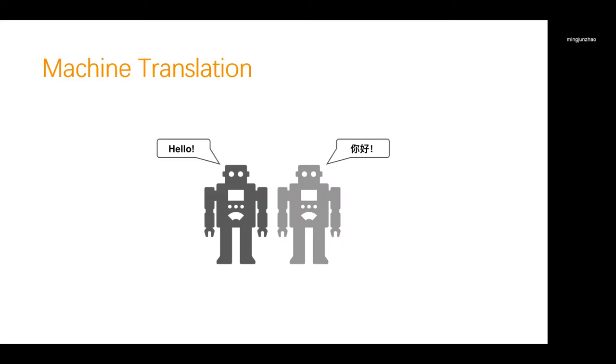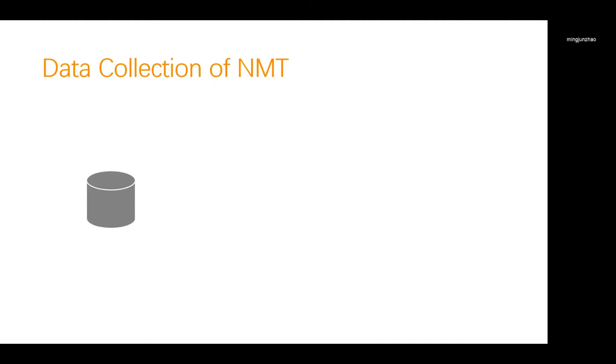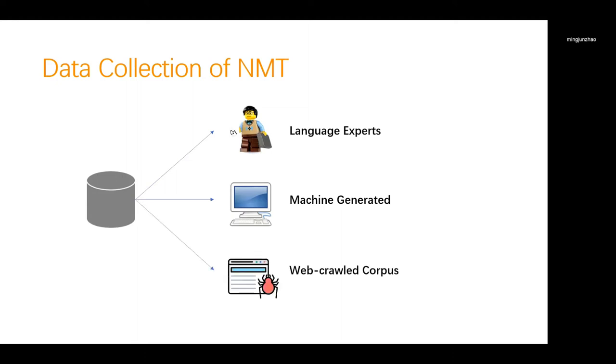Machine translation has achieved great success in generating accurate translations with a single neural network in an end-to-end fashion. Although NMT eliminates the need for hand-crafted features and rules as compared to traditional statistical machine translation methods, yet a well-performing NMT model is largely dependent on large amounts of high-quality training data.